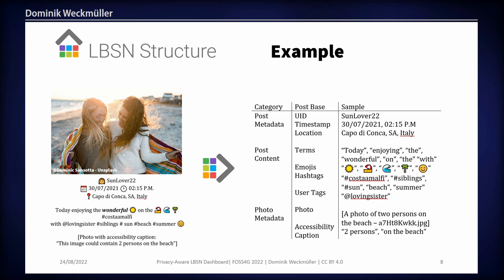For example, take this fictional social media post by SunLover22, which has a text component and metadata. All you do is split it up into metadata — like a user ID such as SunLover22, a timestamp, and a location — and then take all the terms in the caption, like 'today,' 'enjoying the wonderful,' along with the emojis. You get the most atomic components of each social media post, and you can repeat this process with all different social media platforms.